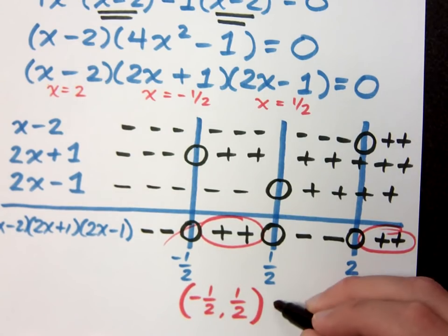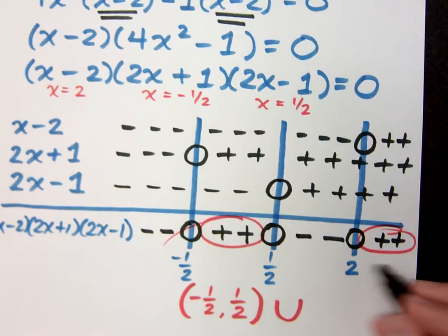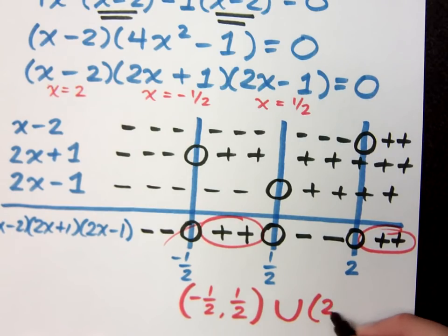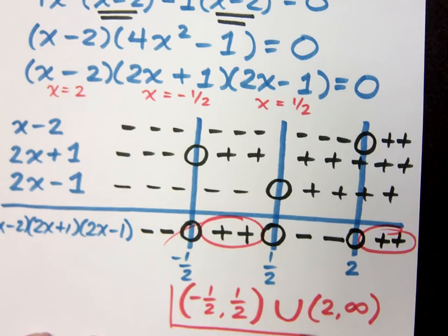But then I have to join this using that union symbol with the other part here which goes from 2 to infinity. So this right here will be my interval notation for the solution set.